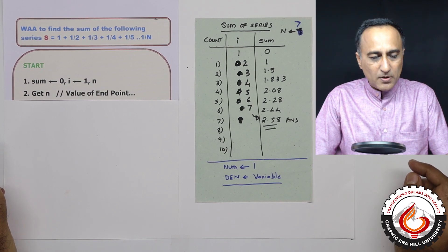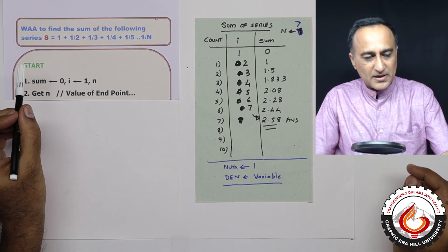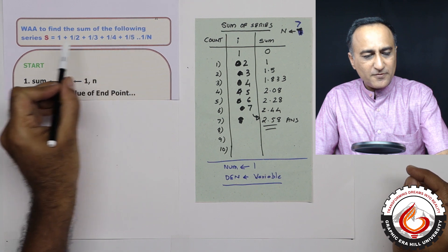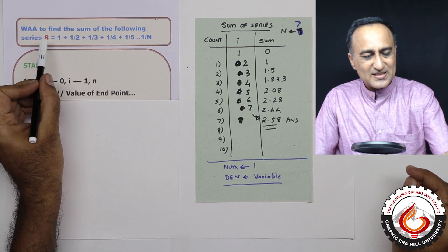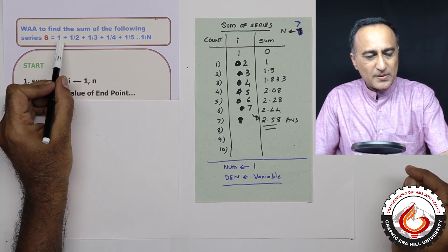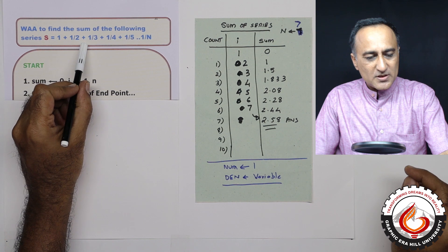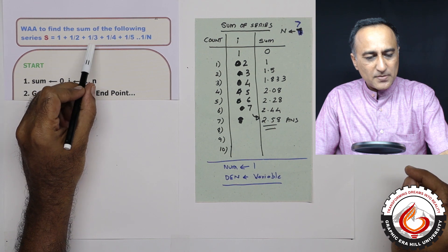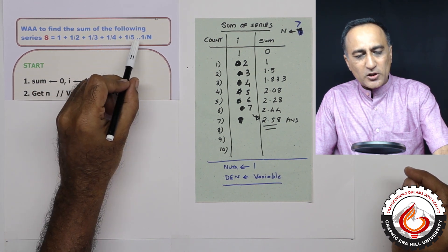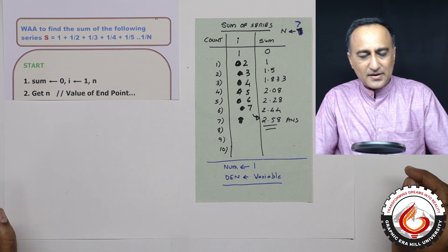This particular problem says: find the sum of the following series, where the sum is given by 1 plus 1 upon 2 plus 1 upon 3 plus 1 upon 4, all the way till 1 upon n.